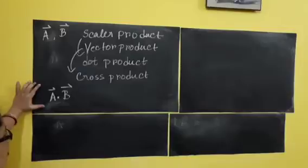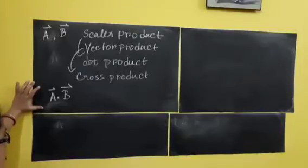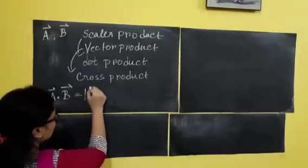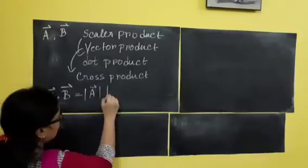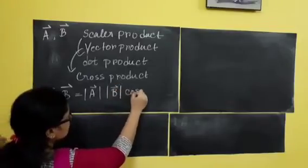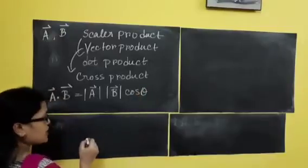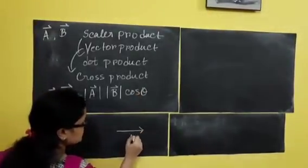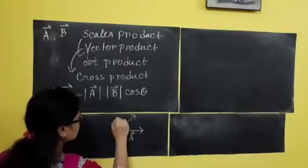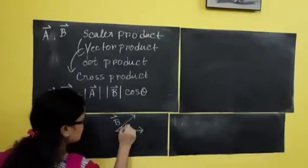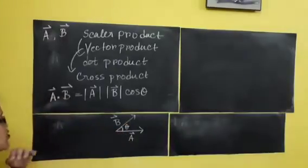According to the formula of scalar product, we know that A dot B is equal to the magnitude of vector A multiplied by the magnitude of vector B multiplied by cos theta. From where are we getting theta? Suppose one vector is along this direction — this is vector A. Another vector is moving along this direction — this is vector B. So this is the angle between these two vectors.